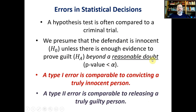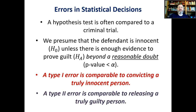A Type 1 error is comparable to convicting a truly innocent person. You're presuming the defendant is innocent, but overwhelming evidence could come up and the jury would decide to convict — even though that person might be truly innocent. A Type 2 error is comparable to releasing a truly guilty person: the person might actually be guilty, but there's not enough evidence to convict.